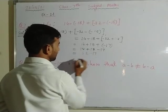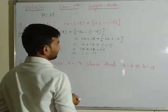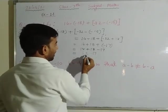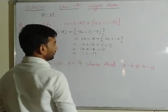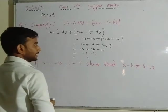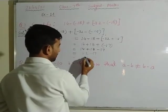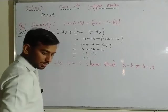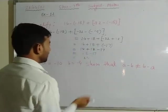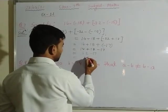Minus 17 equals 32 minus 17. Now subtract: 32 minus 17, that is 12 minus 7 equals 5, and 2 minus 1 equals 1. The answer becomes 15. So the answer is 15 with a positive sign. This completes the simplification of question number 7.